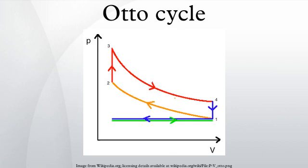The system is defined to be the mass of air that is drawn from the atmosphere into the cylinder, compressed by the piston, heated by the spark ignition of the added fuel, allowed to expand by pushing on the piston, and finally exhausted back into the atmosphere. The mass of air is followed as its volume, pressure, and temperature change during the various thermodynamic steps.